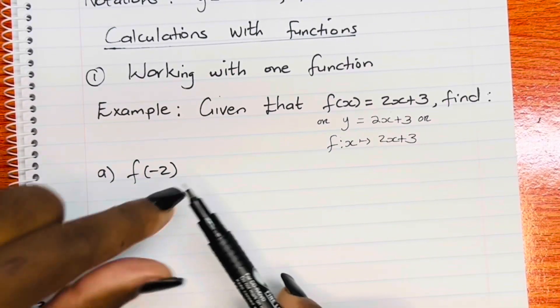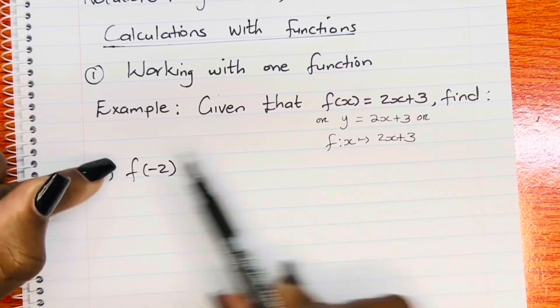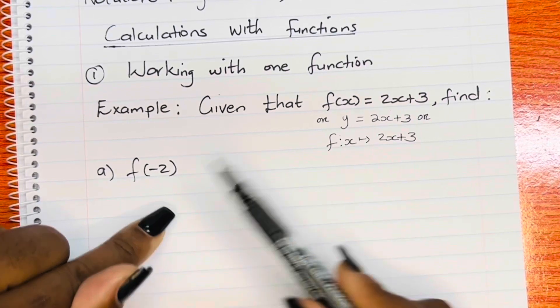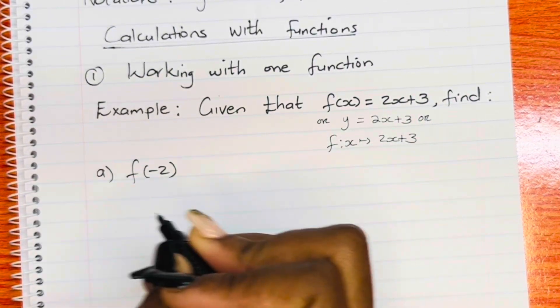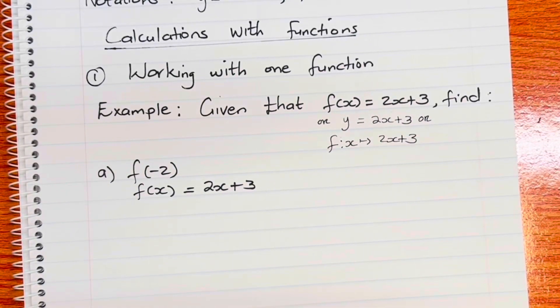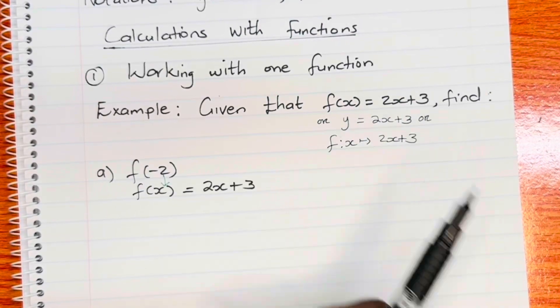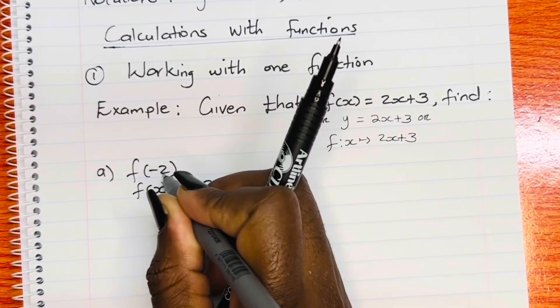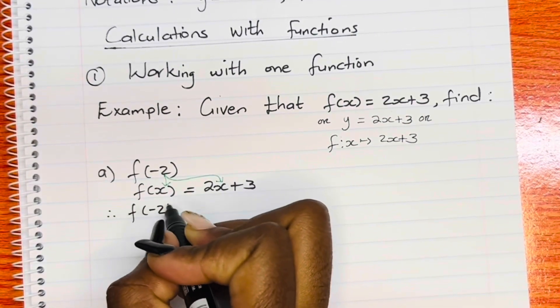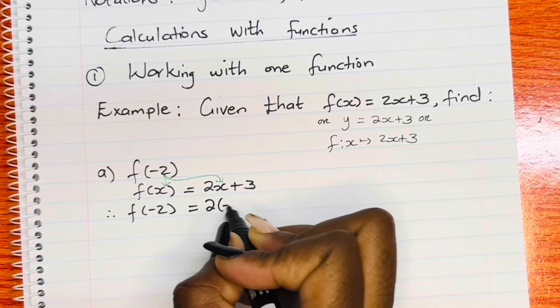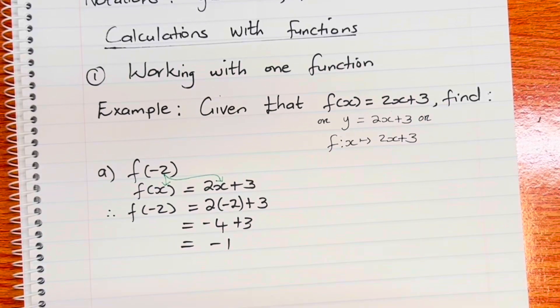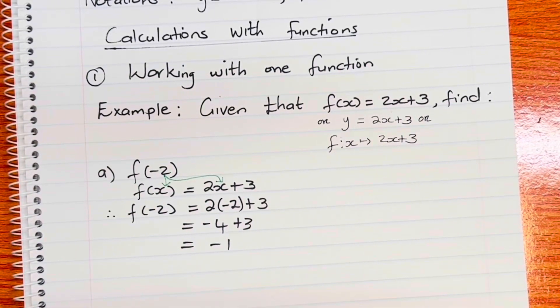The very first question that you can expect under function is, after having a function f of x equal to 2x plus 3, they can ask you to find, for example, f of negative 2. But what does this actually mean? I know that f of x is equal to 2x plus 3. Now they want me to find f of negative 2. What does that mean? x became negative 2. So it just means that on the other side, which is the right-hand side, I must also replace x with negative 2. So it means f of negative 2 will be 2, and then negative 2 to replace x plus 3, and then I do my calculation, which is equal to negative 1.